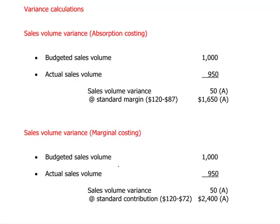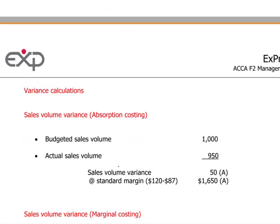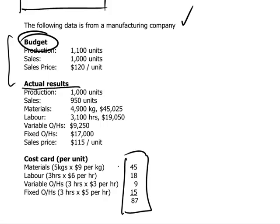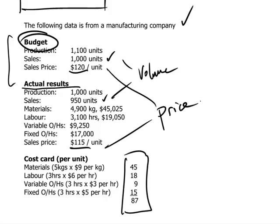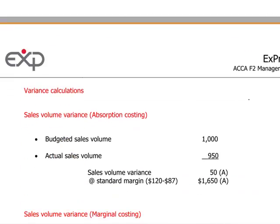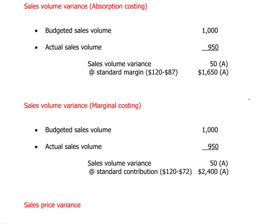Let's start with the sales-related variances. Budgeted sales were 1,000 units and sales achieved were 950 units, giving us a volume-related variance. The budgeted sales price was $120 per unit but the actual sales price achieved was $115, so we also have a price-related variance. The revenue variance thus has two dimensions: volume and price, and we use variance analysis to separate out these two effects.